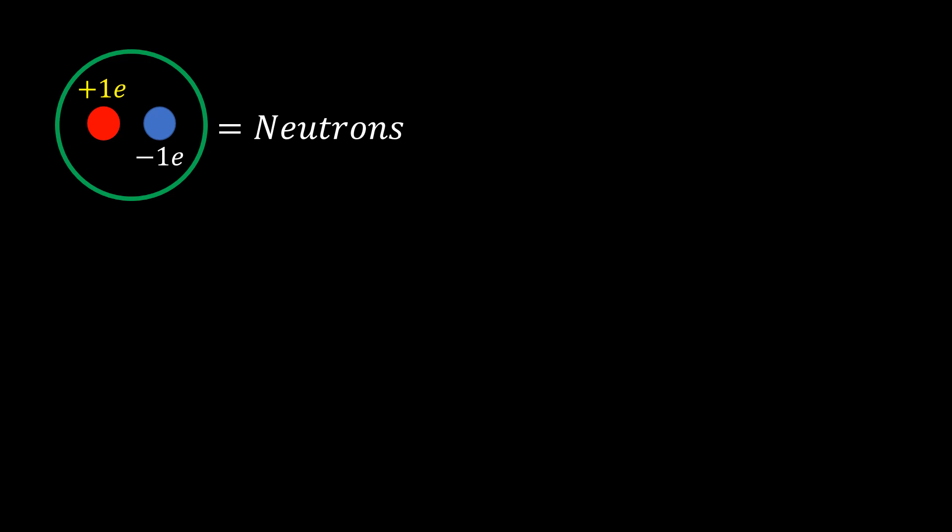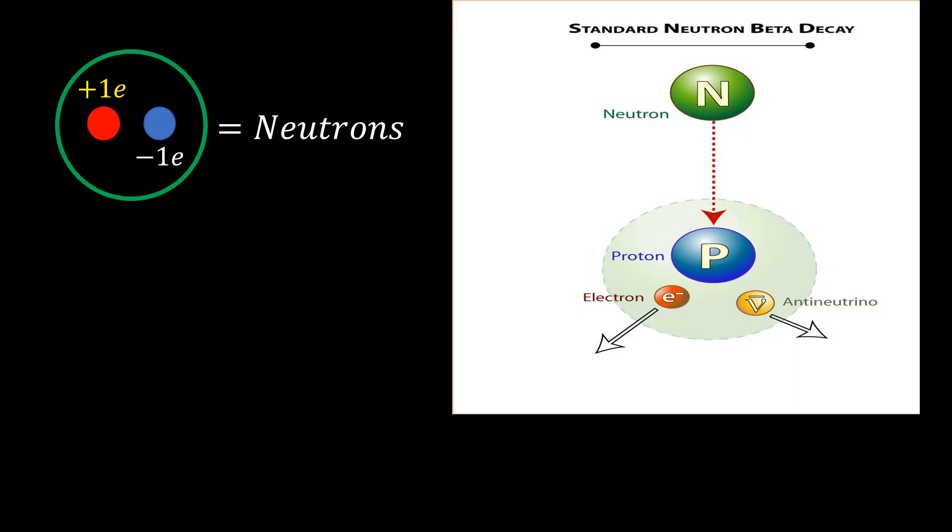Since the discovery of the neutron by Chadwick, neutrons were thought to be tiny spheres containing a single proton and a single electron, reason why they are neutral. Around the same time, radioactivity was discovered, and it was observed that neutrons could decay spontaneously to produce a proton and an electron with the emission of energy in the form of gamma rays. Nowadays, with the advent of particle physics, anti-neutrinos have been added as a product of this decay. This is called beta decay because an electron, which is sometimes referred to as the beta particle, is emitted. Since these electrons came from the nucleus, it was thought that electrons were present in the nucleus of the atom, specifically in the neutron.